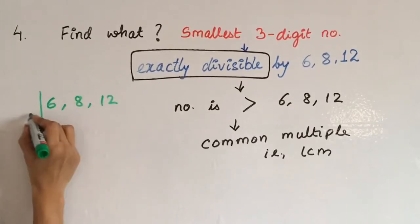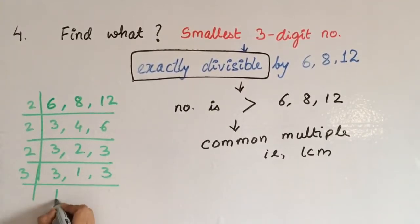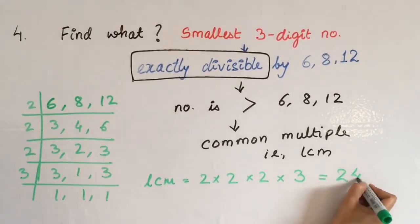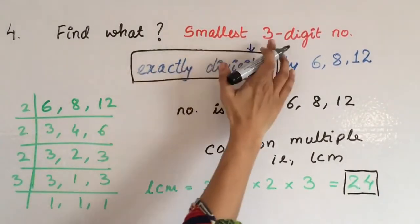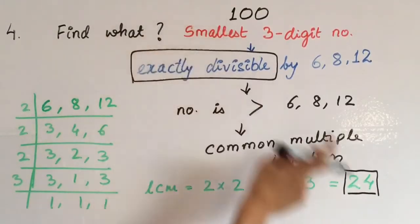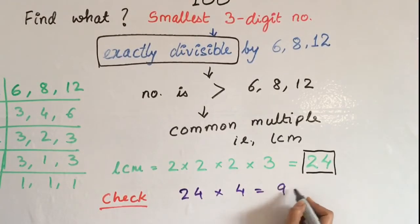Let us find it out. 6, 8, 12, we will divide by 2. Again we can divide by 2. Again 2. Now we have to divide by the number 3. When we have product, what you get is 24. Now, 24 is a 2-digit number. We need to find the smallest 3-digit number. So the smallest 3-digit number is 100. What we have to find out is a multiple of 24 which is close to 100. Let us check. 24 multiplied by 4 gives 96, this is small. Multiply by 5, we get 120. This is a 3-digit number and it is the smallest one which is exactly divided by 6, 8 and 12.